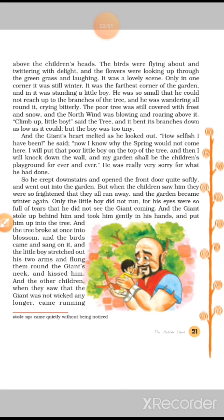Climb up, little boy, said the tree, and it bent its branches down as low as it could, but the boy was too tiny. Joh tree tha usne kya bola — climb up, chadh jaa — aur usne apne branches neeche kiye, lekin bachcha itna chhota tha ki woh abhi bhi chadh nahi paaya. And the giant's heart melted as he looked out. How selfish I have been, he said, now I know why the spring would not come here. Aur giant ka jo heart tha woh chhote bachche ki harkatein dekh ke melt ho gaya, aur woh sochne laga ki mein kitna selfish hun — isi wajah spring mere garden mein nahi aa raha tha.